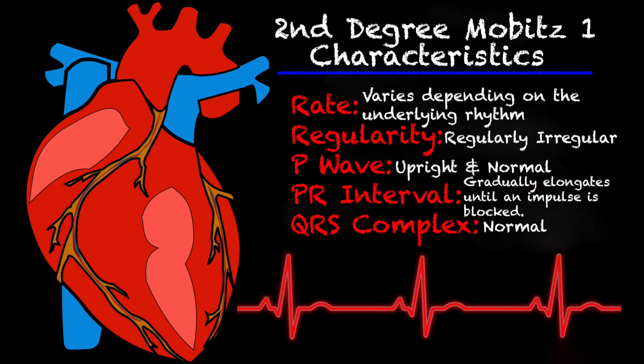Your P waves will be present and upright, so the P waves will be completely normal. Your PR interval is what is going to gradually elongate until an impulse is blocked. The QRS complexes that are present are completely normal, but there will be a QRS complex that is dropped because the impulse is blocked.